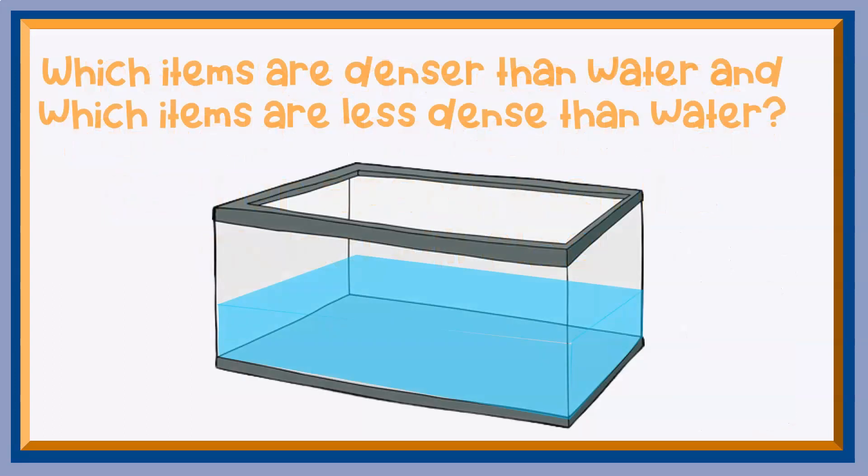Which items are denser than water, and which items are less dense than water? An eraser. A flip-flop. A marble. A wood block. A rock. A ruler. A stick. A nickel. A fork. Which of those objects are denser than water? Which of those objects are less dense than water? How do you know?